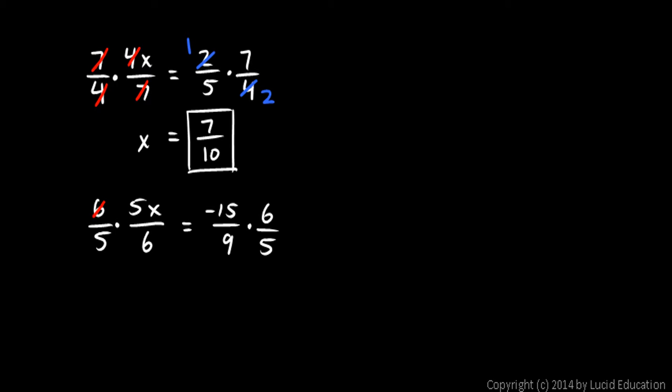On the left, all these numbers cancel out, the 6s and the 5s, and that leaves me with x on the left. On the right, I can reduce these fractions. The 15 and the 5 can both be divided by 5, so that reduces to a 3 and that reduces to a 1.